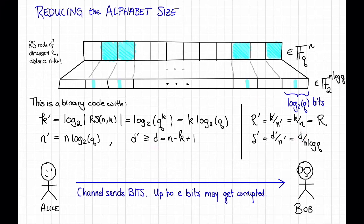But then this is smaller or equal to delta, the relative distance of the original Reed-Solomon code, divided by log n, because n is always at least q for a Reed-Solomon code.